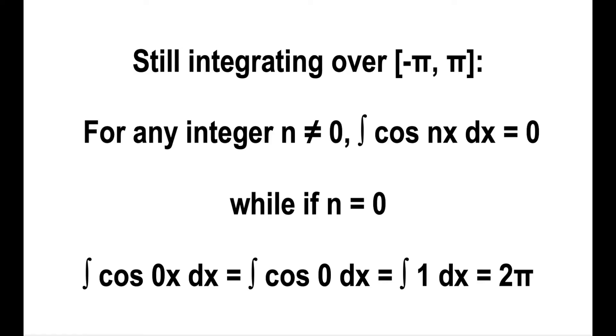Now there's an exception in the cosine case, because while sine 0 is 0, the cosine of 0 is 1, and when you integrate 1 over the period you get 2pi.